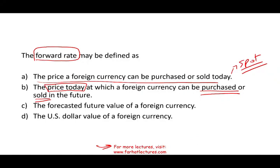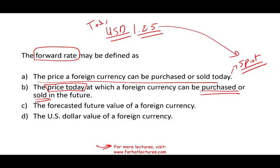Simply put, let's assume you want to travel to Europe today. If you want to buy the euro, you have to pay $1.25 per euro — let's assume that rate. This is today. This is the spot rate. But you are traveling 30 days from today. Here's what you can do: you can go to the forward market and see that you can lock in your rate at $1.30.